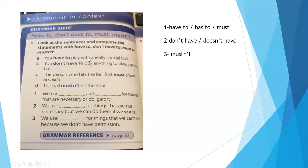You have to play with a real special phone. You don't have to buy anything to play — just a phone. The person with the special phone has to hit the ball first. The ball mustn't hit the floor. Here we use 'has to', 'have to', or 'must' for things that are necessary or obligatory.